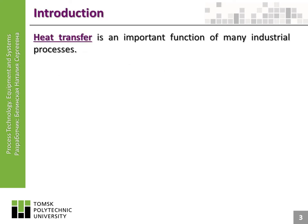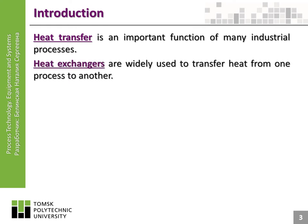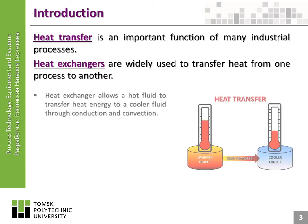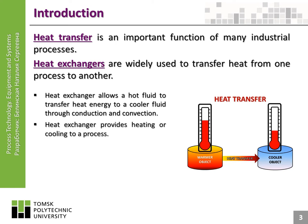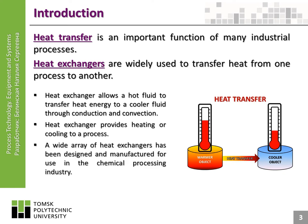Heat transfer is an important function of many industrial processes. Heat exchangers are widely used to transfer heat from one process to another. A heat exchanger allows a hot fluid to transfer heat energy to a cooler fluid through conduction and convection, providing heating or cooling to a process. A wide array of heat exchangers has been designed and manufactured for use in the chemical processing industry.